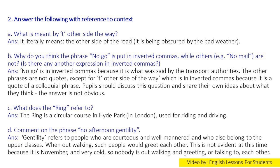Section 2: Answer the following with reference to context. Question A: What is meant by 'other side the way'? Answer: It literally means the other side of the road. Question B: Why do you think the phrase 'no go' is put in inverted commas, while others, e.g. 'no mail', are not? Is there any other expression in inverted commas? Answer: 'No go' is in inverted commas because it is what was said by the transport authorities. The other phrases are not quotes, except for 'other side of the way', which is in inverted commas because it is a colloquial phrase.